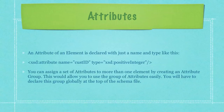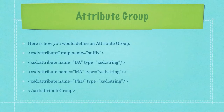You can assign a set of attributes to more than one element by creating an attribute group. This allows you to use the group of attributes easily. You'll have to declare this group globally at the top of the schema file. Here is how you would define an attribute group — I'm defining one with the name 'suffix' and then stating the attributes assigned to it.